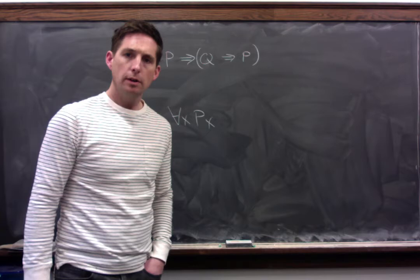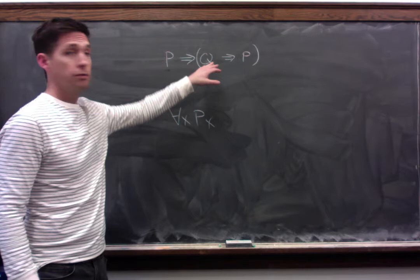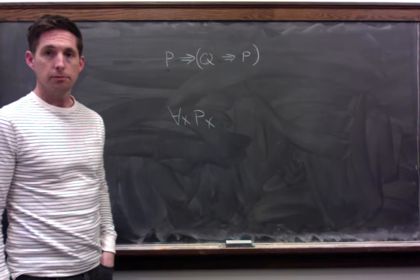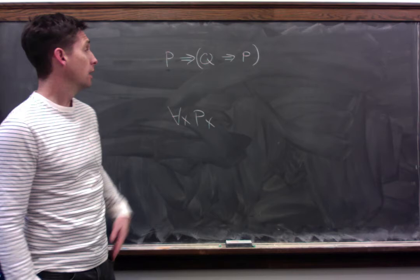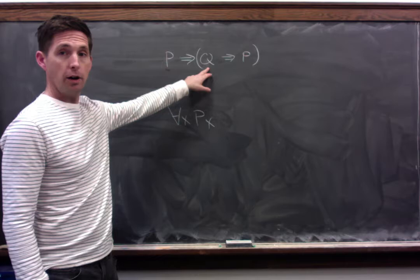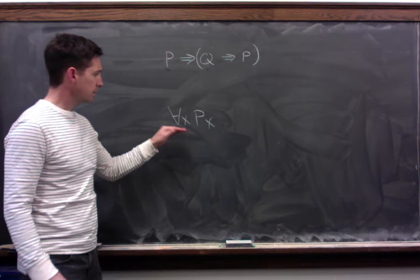Let's start off by thinking about something from sentential logic. Take a formula like this: if P, then if Q, then P. What do we need to know to know whether that formula is true? Well, really just two things — you need to know the truth value of P and Q. So once you know if P and Q are true or false, you can work out the truth value of that whole formula. That's sentential.